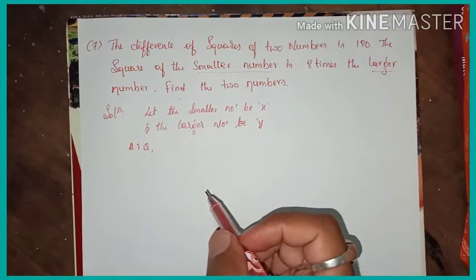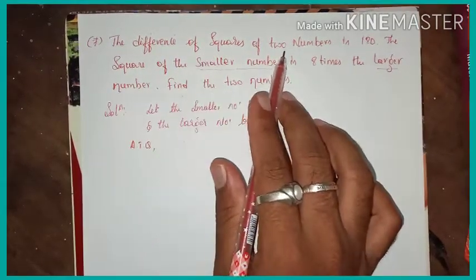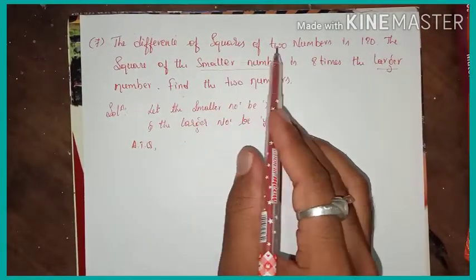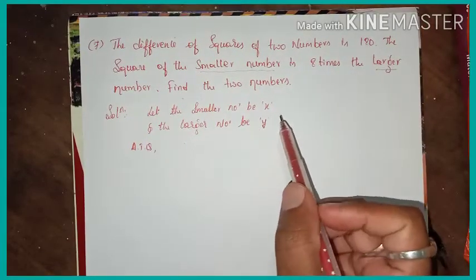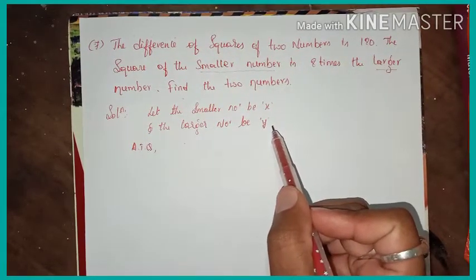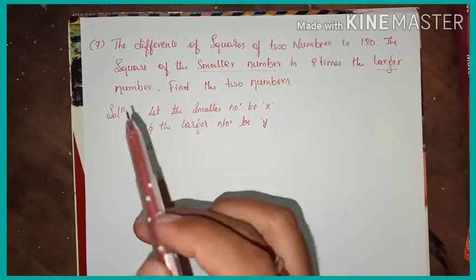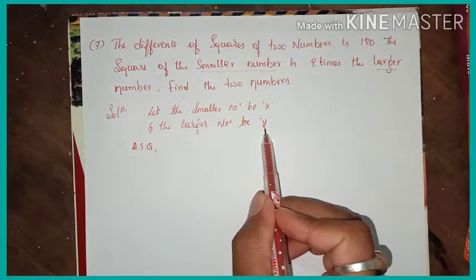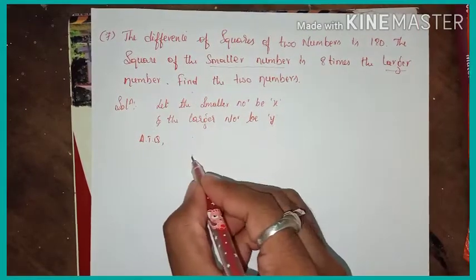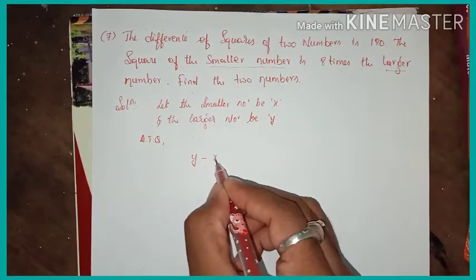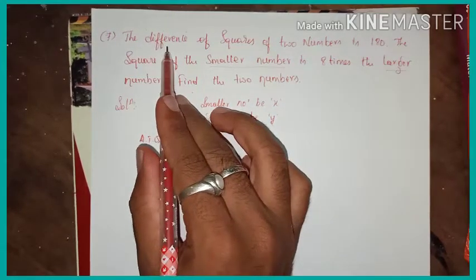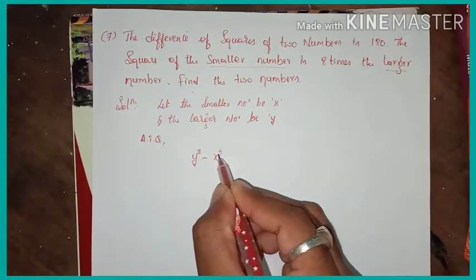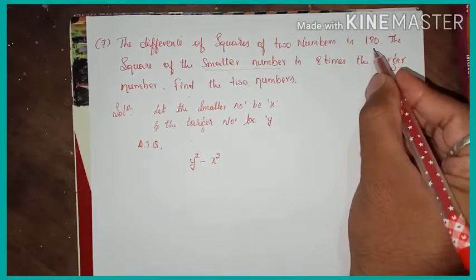According to the question, the difference of squares of two numbers is 180. When taking a difference, the larger number comes first. So we take y squared minus x squared equals 180.